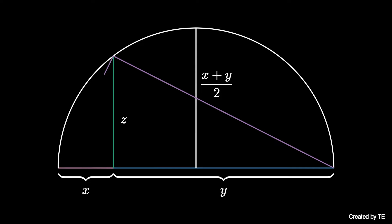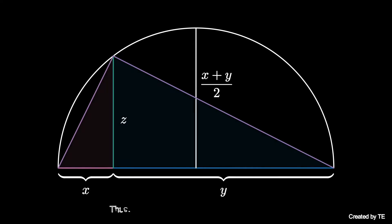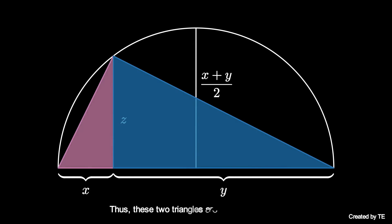Connecting the ends of the diameter to the intersection of z on the circle yields a triangle, and by Thales' triangle theorem this triangle must be right angled. Consequently, these two sub-triangles are similar, so that the ratios z over x and y over z are equal.